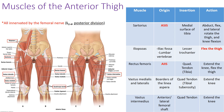Getting into the muscles of the thigh, we start with the anterior thigh. All muscles of the anterior thigh are innervated by the femoral nerve. Note the important distinction: the thigh refers to the region between your hip and your knee, not the leg. So what are the muscles of the anterior thigh?